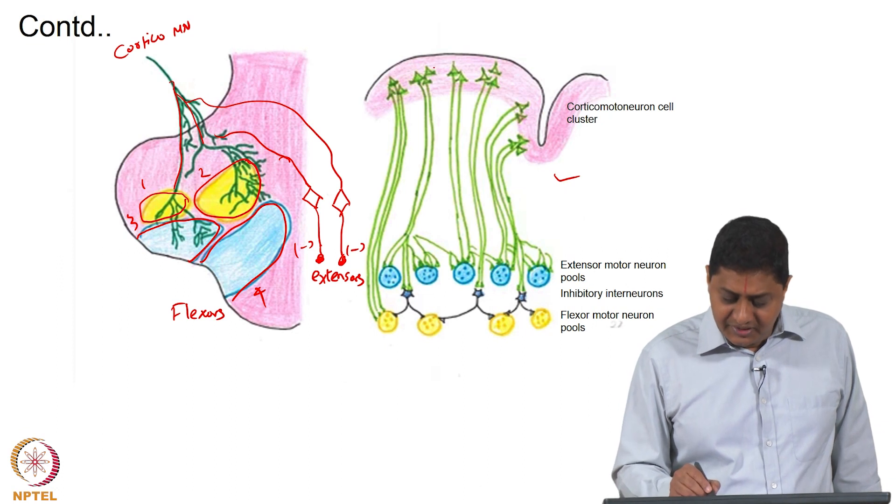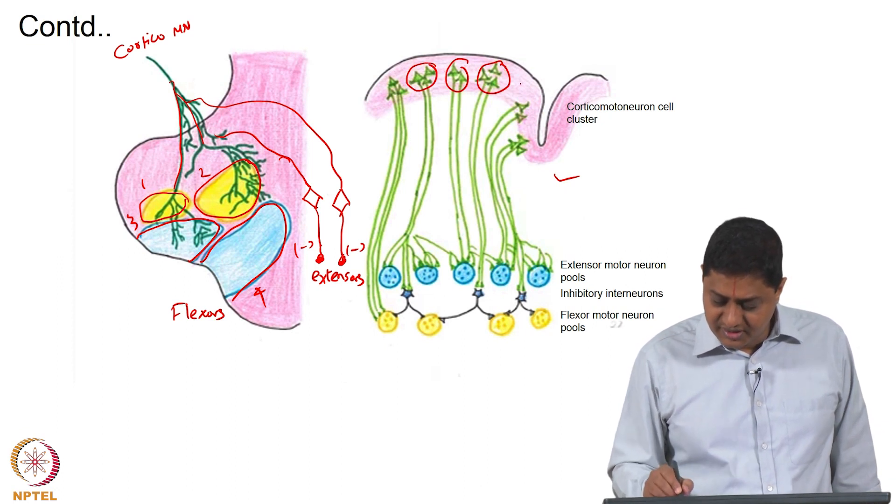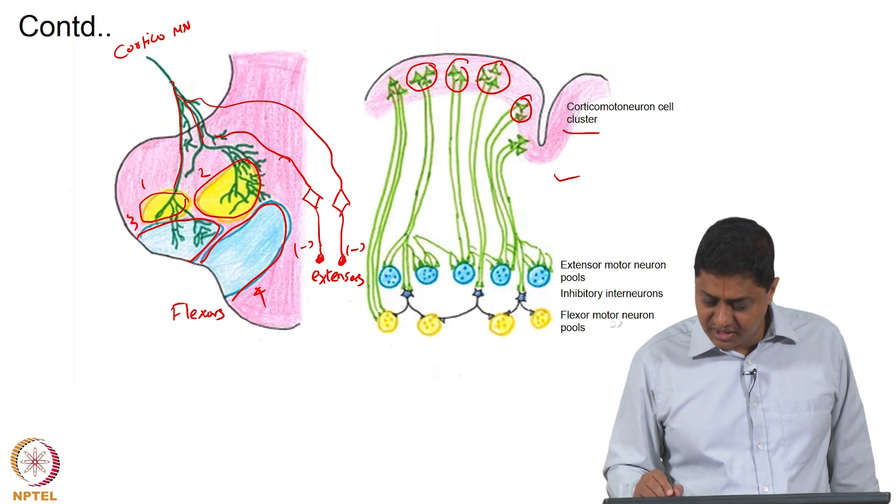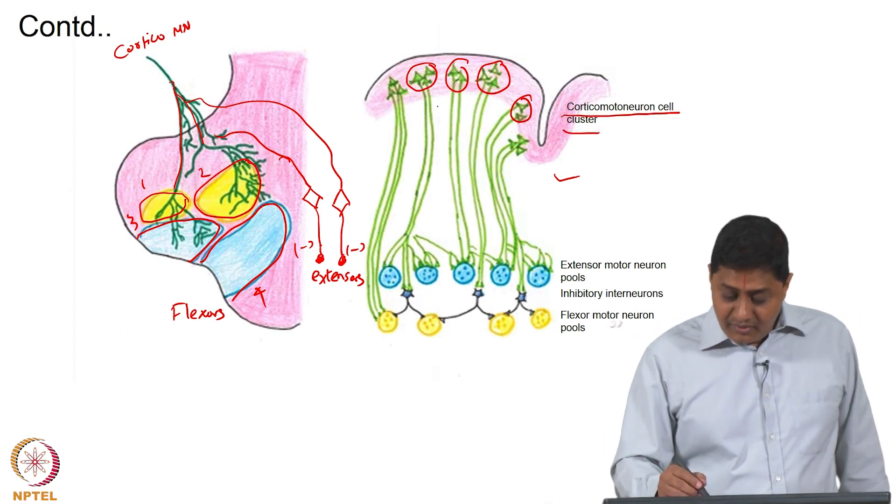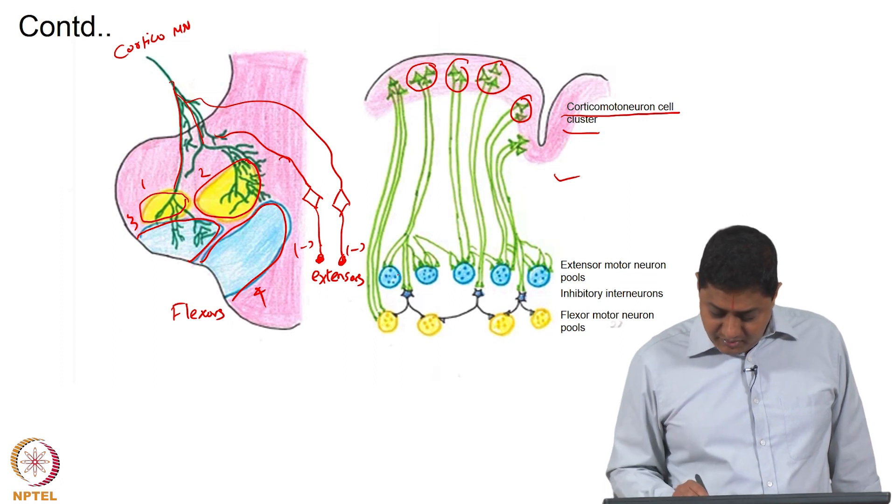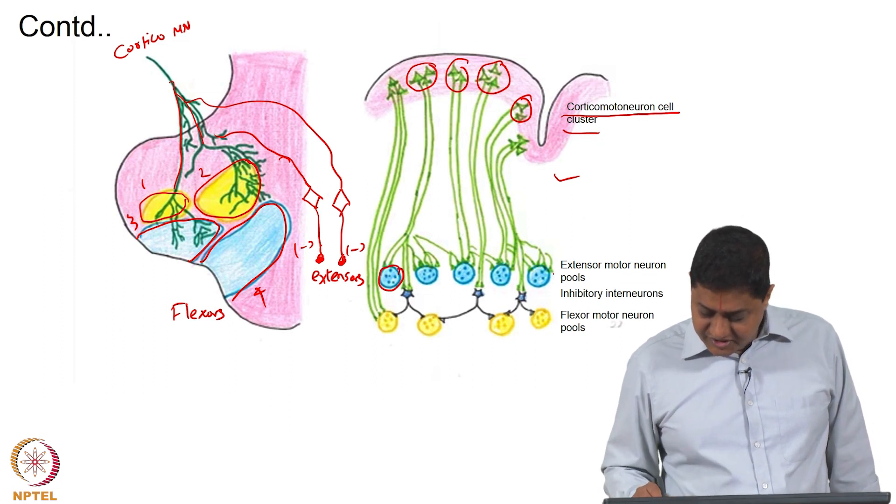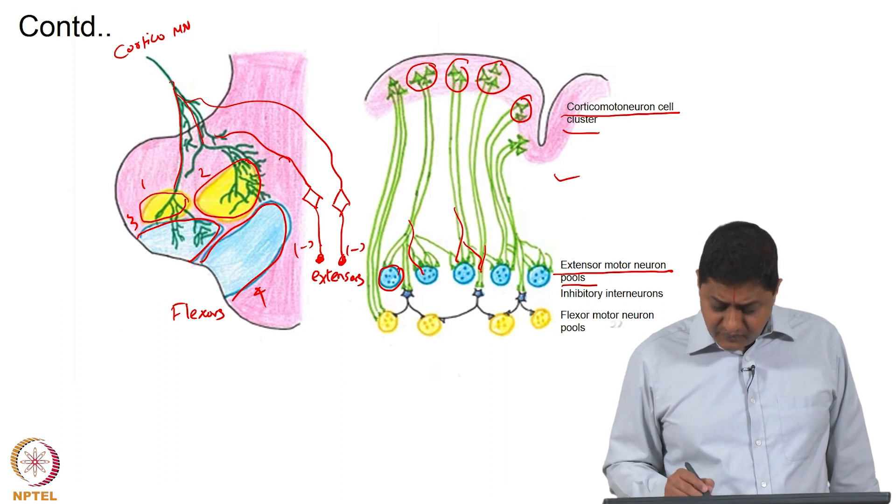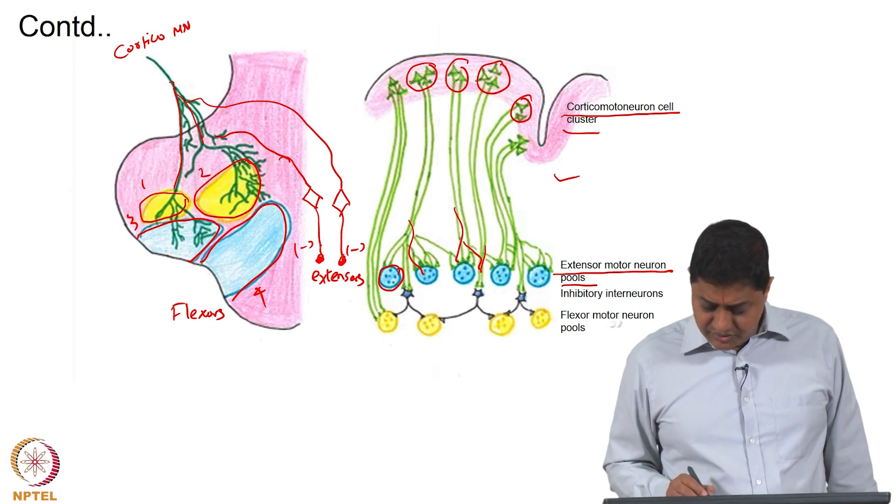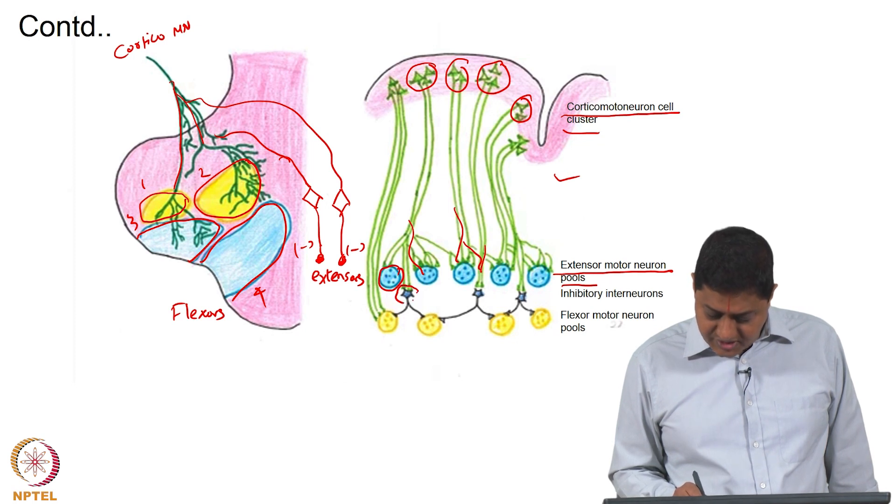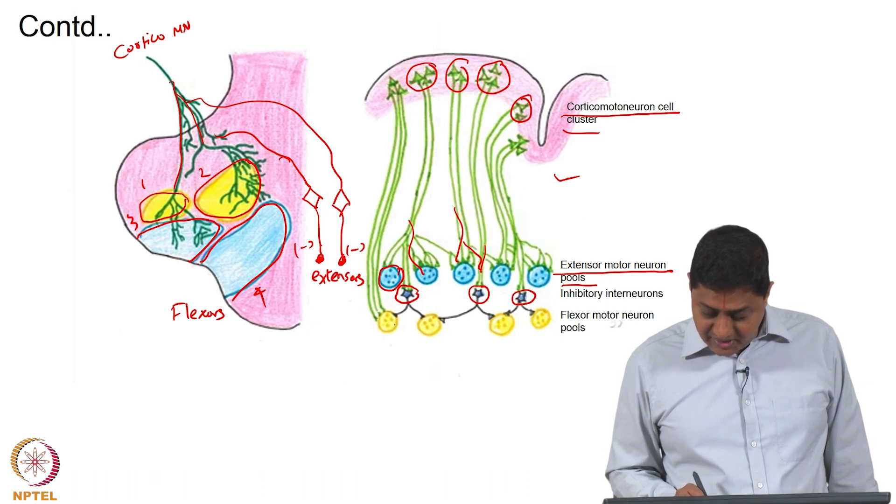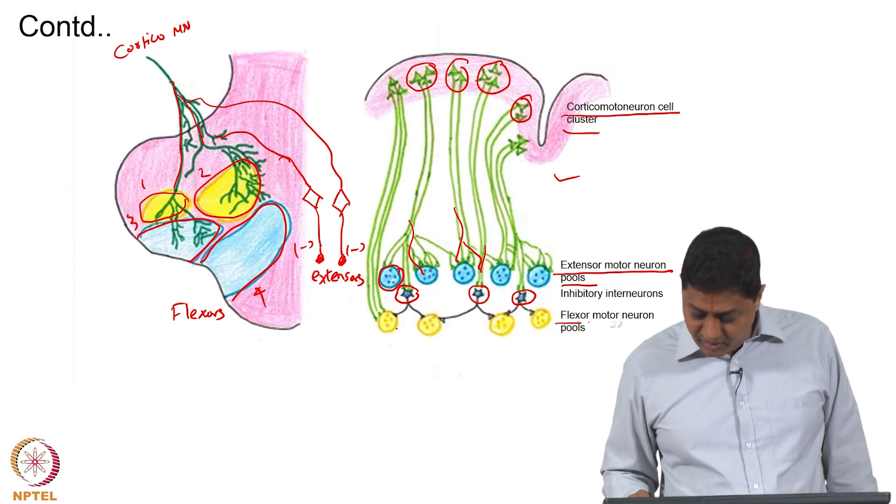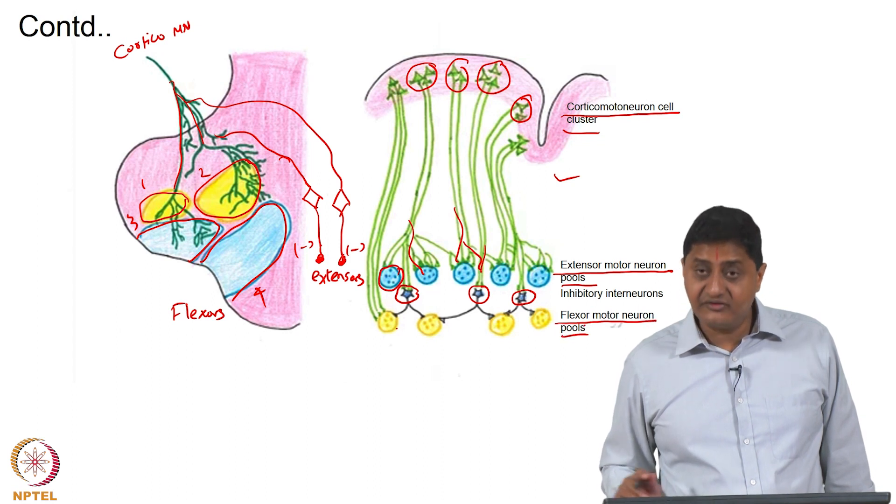Input from multiple clusters of corticomotor neurons. Here are different clusters of corticomotor neurons. They project onto multiple motor neuronal pools of extensors. There is divergence here, and what is also shown is that through inhibitory interneurons, they also inhibit the activity of the flexors, of the antagonists.